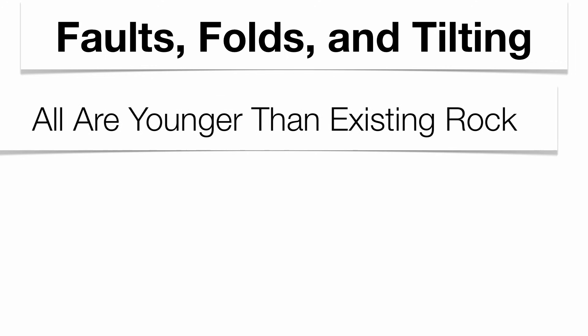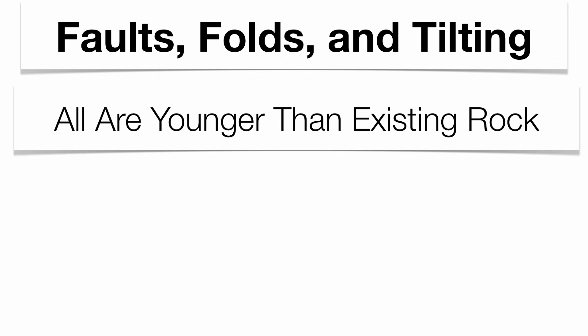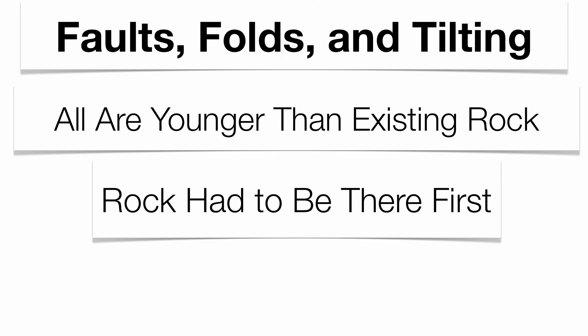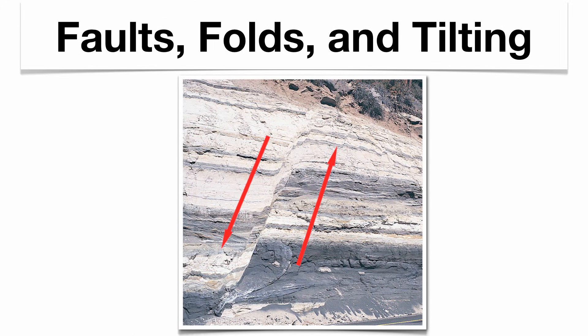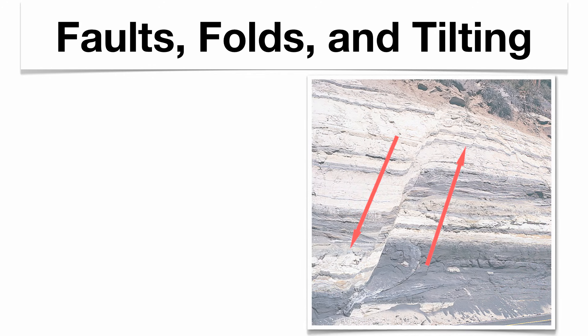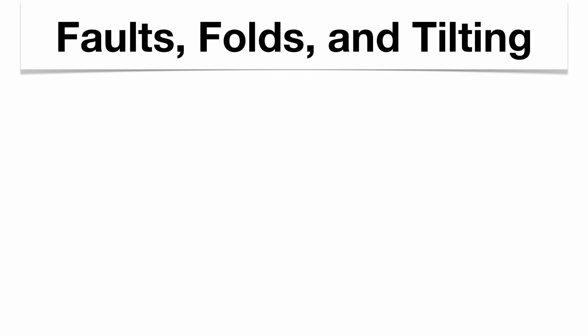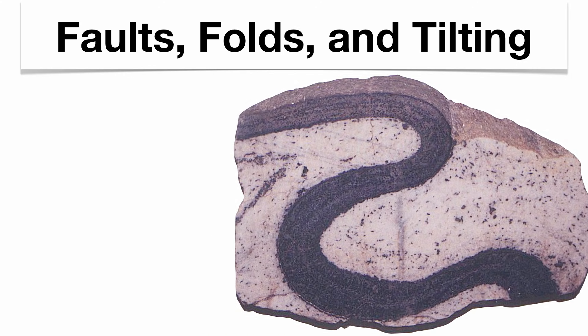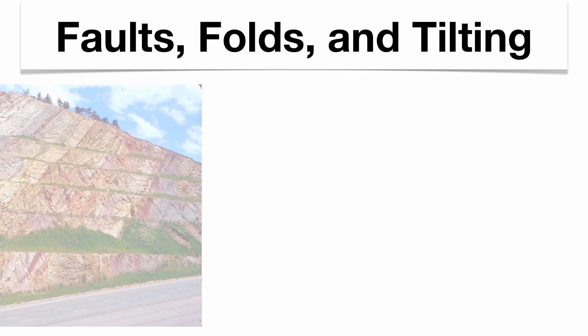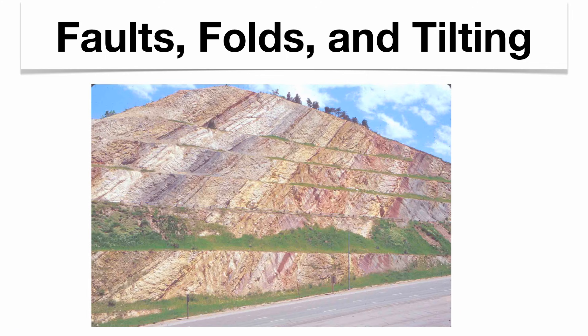Folds, faults, and tilting — any kind of deformation — are always younger than the pre-existing rock. The rock had to have been there first before the alteration occurred. Here's a picture of a fault, here's a fold, and here's some tilted rock that's also faulted.